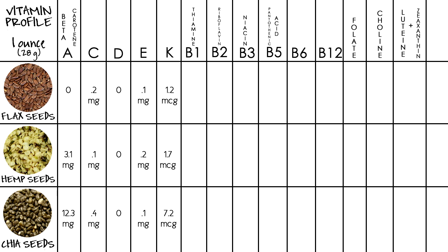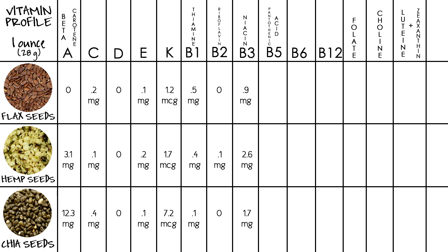For vitamin K: flax seeds 1.2 micrograms, hemp seeds 1.7 micrograms, and chia seeds 7.2 micrograms. For thiamine (B1): flax seeds 0.5 mg, hemp seeds 0.4 mg, chia seeds 0.1 mg. For vitamin B2: flax seeds zero, hemp seeds 0.1 mg, chia seeds zero. For niacin (B3): flax seeds 0.9 mg, hemp seeds 2.6 mg, chia seeds 1.7 mg. For pantothenic acid (B5): flax seeds 0.3 mg, hemp seeds 0.3 mg, chia seeds 0.2 mg.